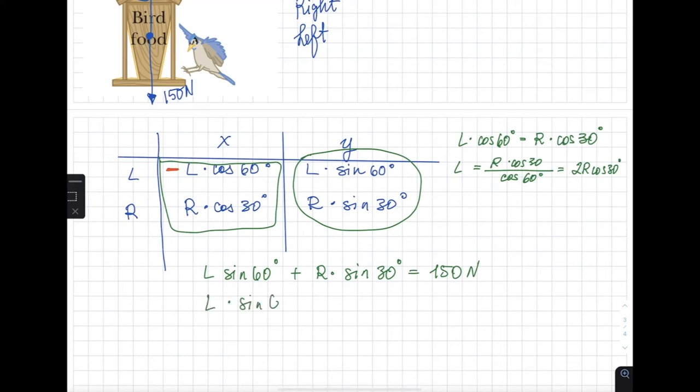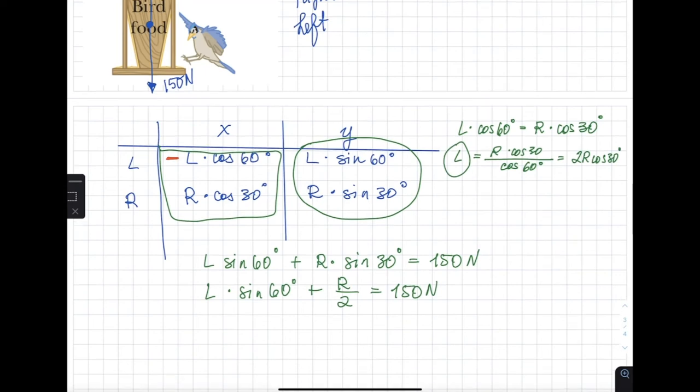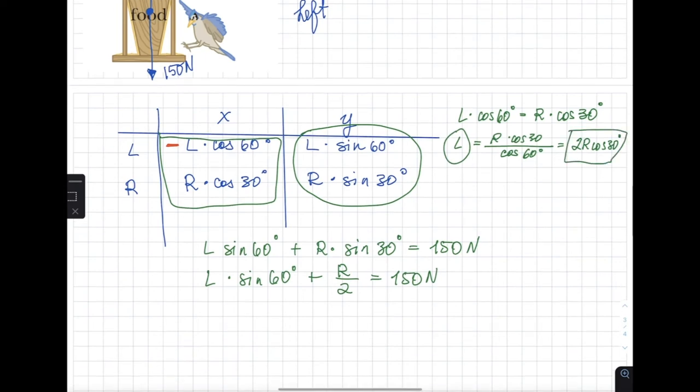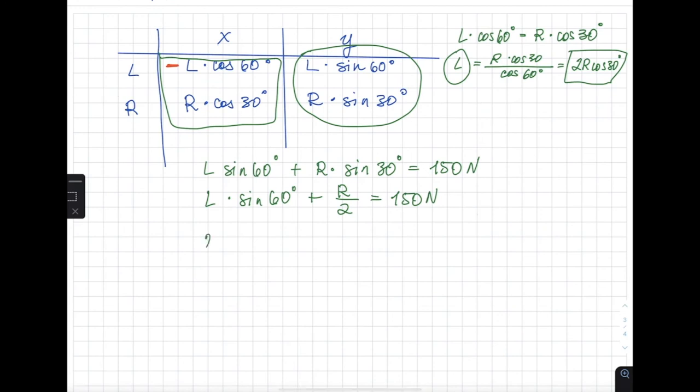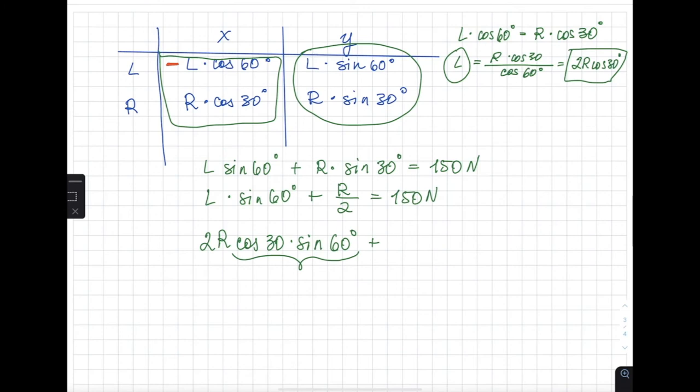So I'm going to say L sine of 60 plus R over 2 equals 150 newtons because I know that sine of 30 is half. Instead of a left, I'm going to use the 2R cosine of 30. So 2R cosine of 30 sine of 60, the beauty of it, it's the same thing, plus R over 2 equals 150 newtons.